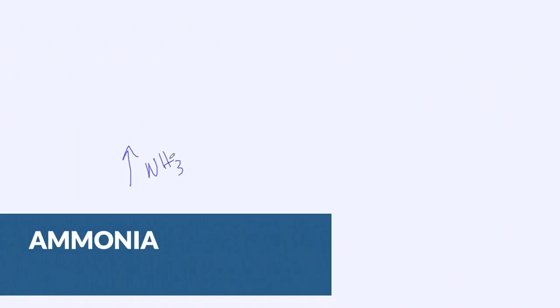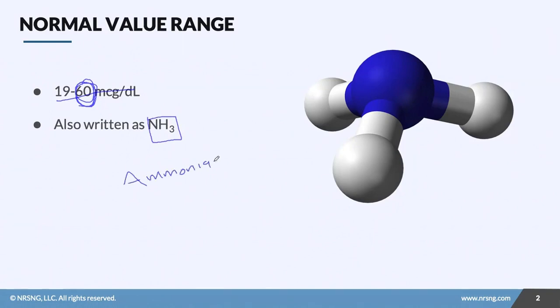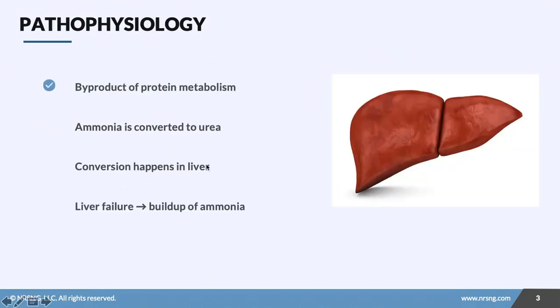We're going to talk about ammonia, which is a pretty cool lab value. Taking care of a patient with really elevated ammonia levels can be a complicated situation. The normal range for ammonia is 19 to 60 micrograms per deciliter. We don't generally worry about a low level — we're really focused on high levels. You might see it written as NH3, but most of the time people just write 'ammonia.'